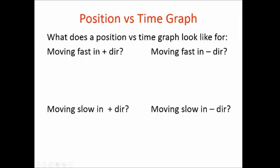Okay, graphing motion. If you are moving fast in the positive direction, then on a graph it is going to be going upwards - it's moving positive and it'll be fairly steep. If you're moving fast in a negative direction, you're going to be downwards and again steep.